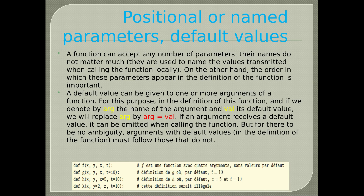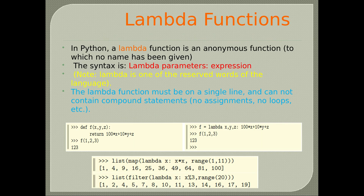Lambda functions: in Python, a lambda function is an anonymous function to which no name has been given. The syntax is: lambda parameters: expression. Note that lambda is one of the reserved words of the language. The lambda function must be on a single line and cannot contain compound statements — no assignments, no loops, etc.